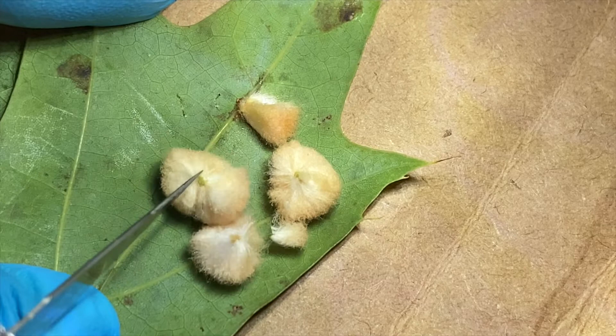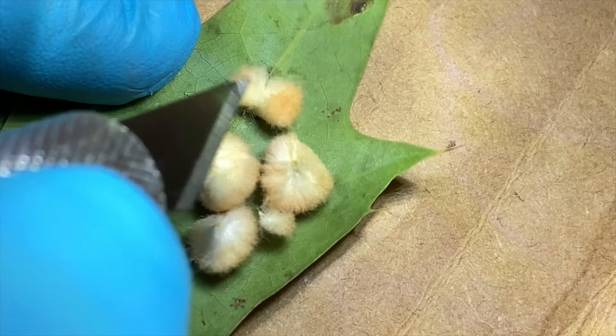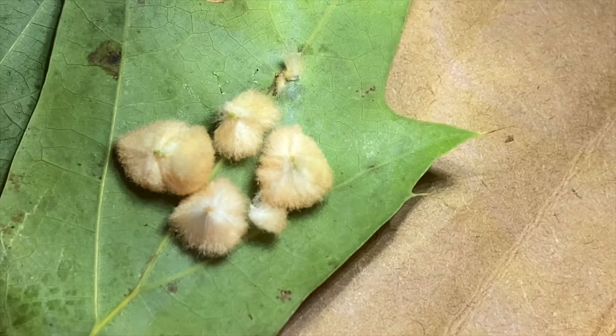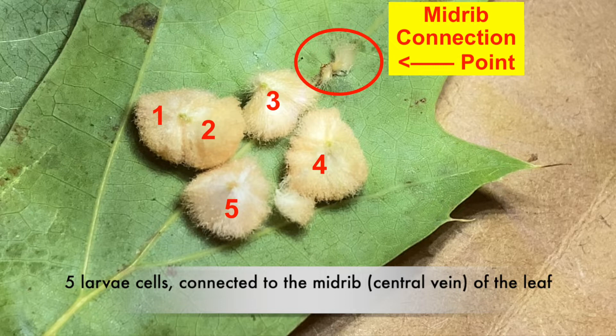Most wasps will feed on insect protein and bring that protein back to their larva, which feeds on it throughout development. In the case of gall wasps, the adult wasps — as far as we know from research — do not eat at all. They only live about a week, just long enough to lay an egg in the plant tissue of the oak tree, and then they die. The only stage of life where they actually eat is the larva, which eats just the interior nutrients provided by the gall.